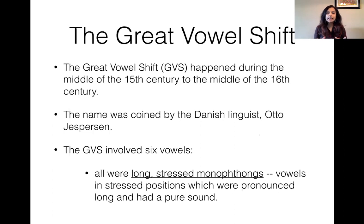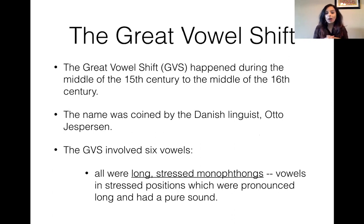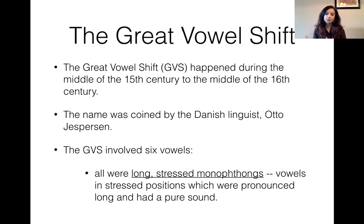The main syntactic or linguistic change that happened during Early Modern English is something I've been alluding to from the beginning of the semester — it's the Great Vowel Shift, called GVS, which happened around the 15th century to the middle of the 16th century. A Danish linguist called Otto Jespersen discovered the Great Vowel Shift, and as the name suggests it has to do with just the vowels — specifically the long stressed monophthongs. No diphthongs play a role; it's only the six long stressed pure vowels.